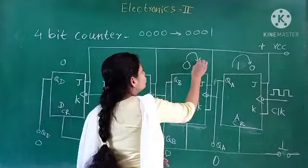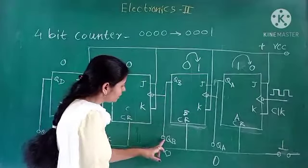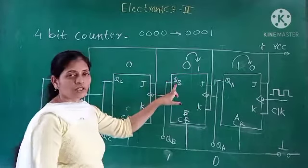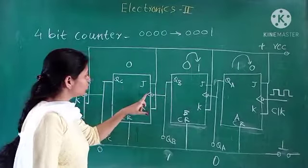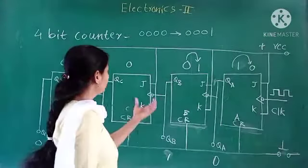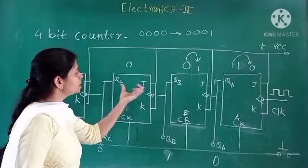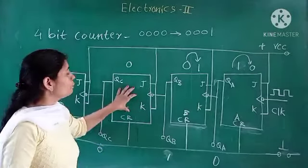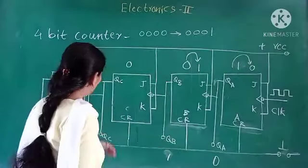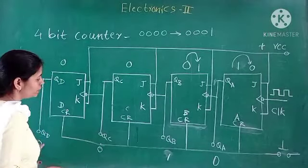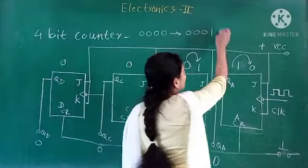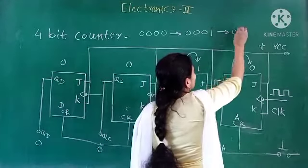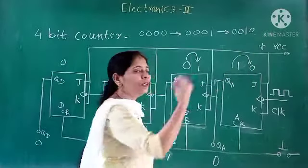The second flip-flop, QB, changes from 0 to 1. This 1 at QB goes to the next clock input, but since it is a positive change, the third flip-flop will not toggle. So the output remains 0 at QC and QD. For the second clock pulse, we get output 0, 0, 1, 0, which is the binary equivalent of 2.